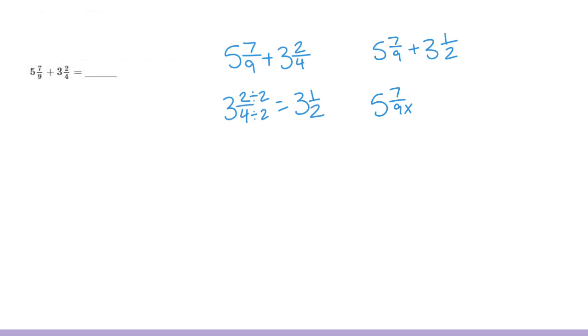5 and 7 ninths times 2 times 2 would give us 5 and 14 eighteenths plus 3 and 1 half times 9 times 9, and this would give me 3 and 9 eighteenths. In this method, I'm going to show the arrow way. If I'm starting with 5 and 14 eighteenths, I could jump 4 eighteenths. If I break apart 3 and 9 eighteenths into 4 eighteenths and 3 and 5 eighteenths, I can jump plus 4 eighteenths to get to 6.